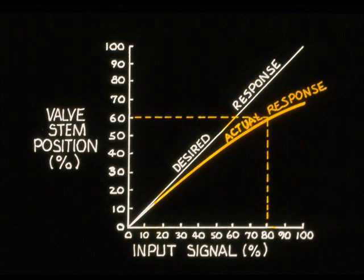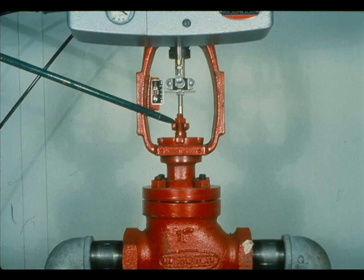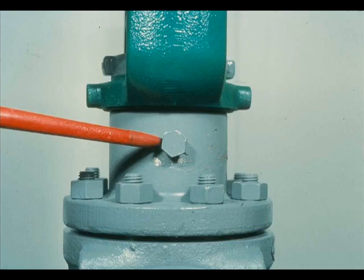Many factors prevent the control valve stem from assuming the correct position. For instance, high pressure drop across a valve may occur on 80% input to produce only 60% valve stem travel. Other factors which can cause non-linear input versus valve stem position are tight packing or no packing lubrication when it is required.